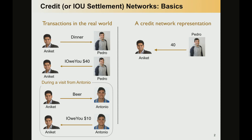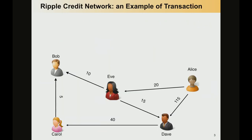The Ripple network is actually an implementation of this concept of the credit network idea. In the Ripple network, we can perform path-based transactions, and these features set it apart from cryptocurrencies like Bitcoin today.